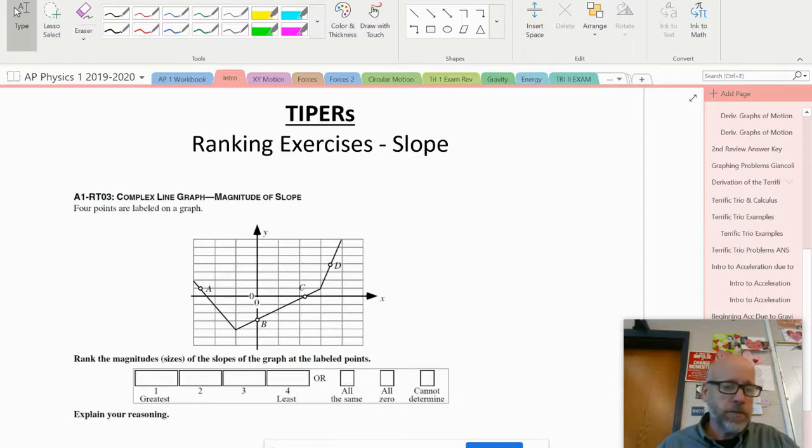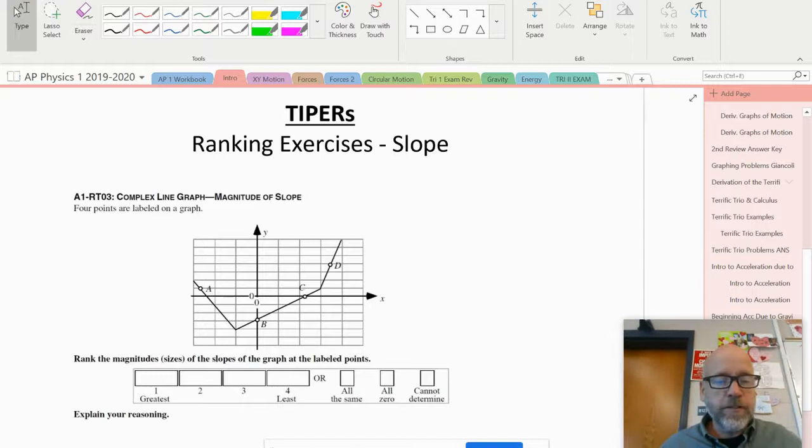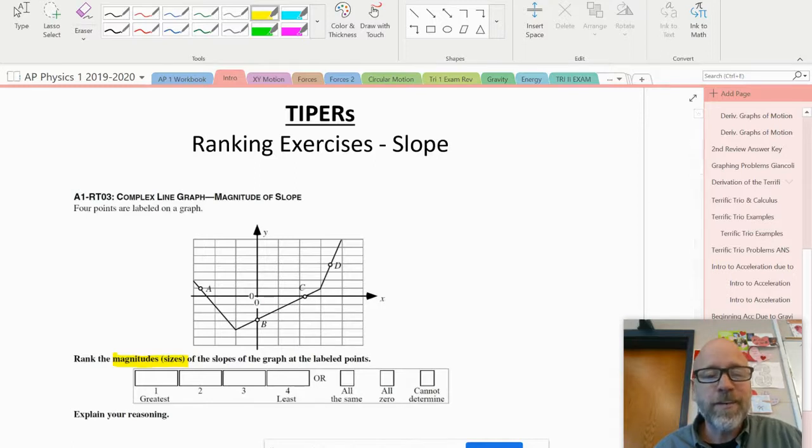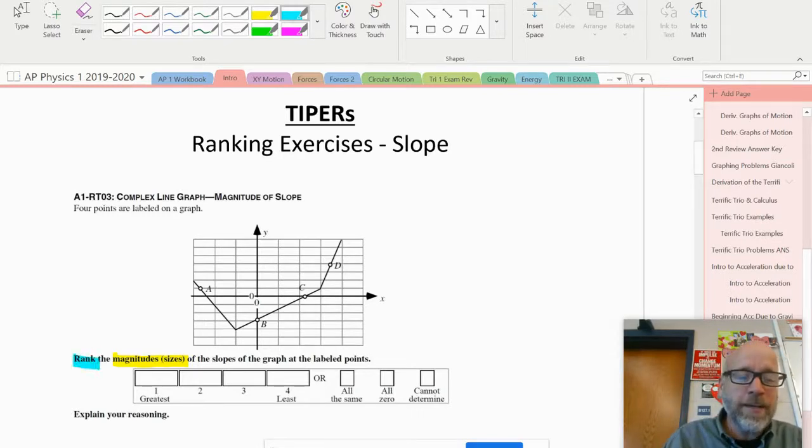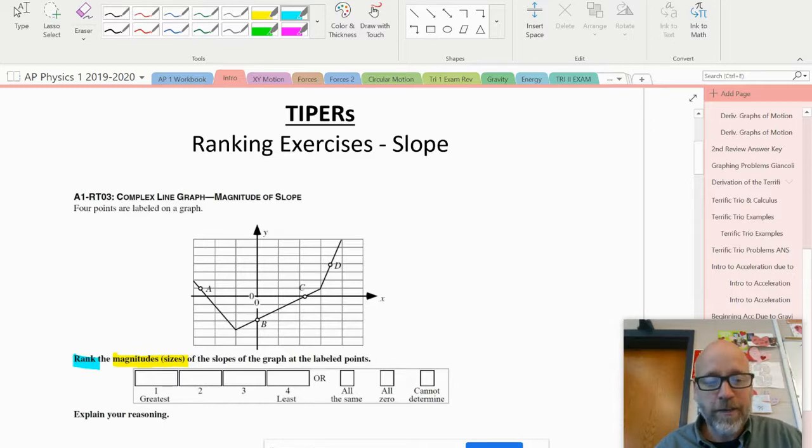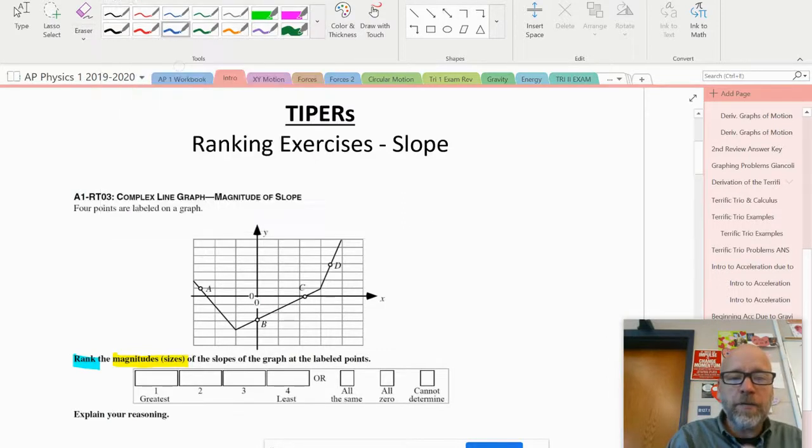The first one says rank the magnitude of the slopes of the graph at the labeled points from greatest to least. Right out of the bat, this says magnitude, which means we ignore the direction—positive or negative doesn't matter. On these ranking exercises, there's almost always a trick. I always like to take the low-hanging fruit, and one thing I see right away is that the slope for B and C is definitely the same. I also see that B and C are definitely less than D—it's just not as steep.